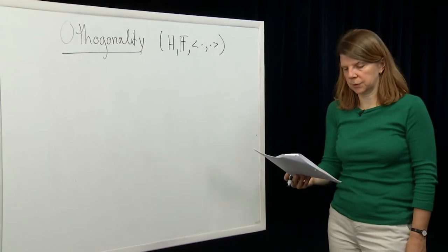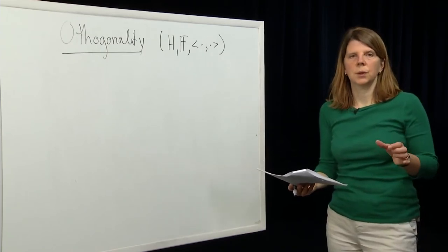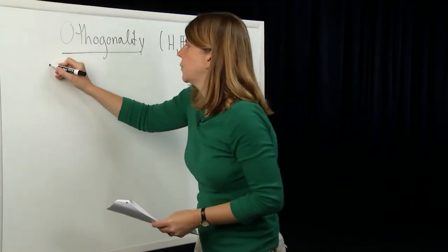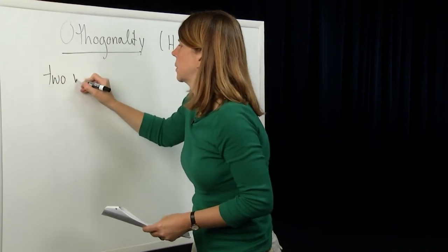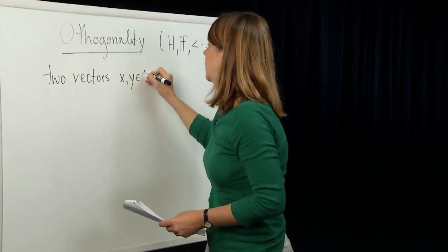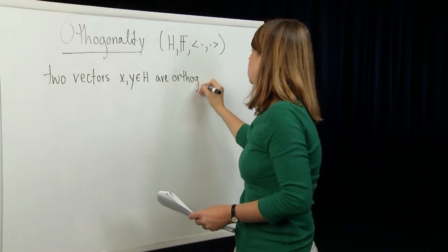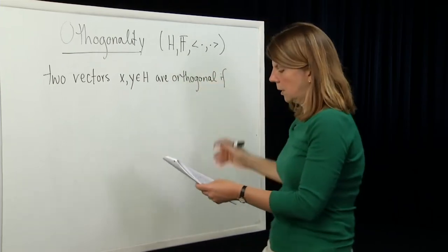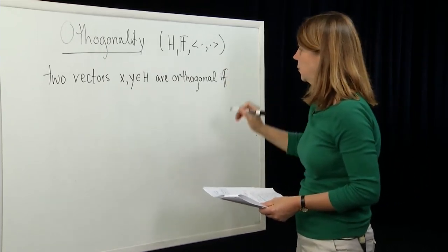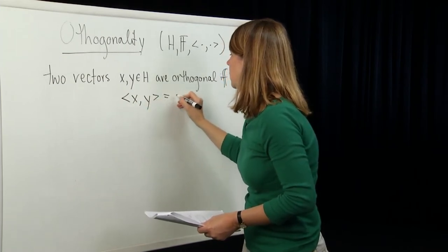We define orthogonal first between vectors in the space H. Two vectors x and y, both in H, are orthogonal if and only if their inner product is equal to 0. So by definition, the inner product between x and y equals 0.